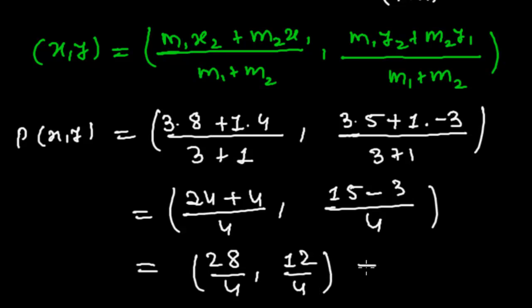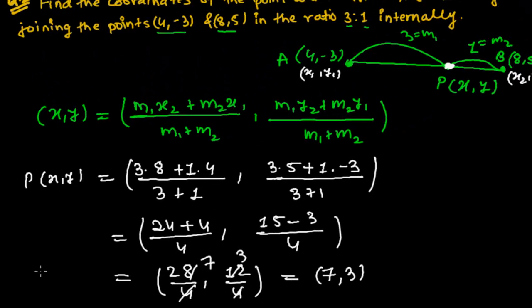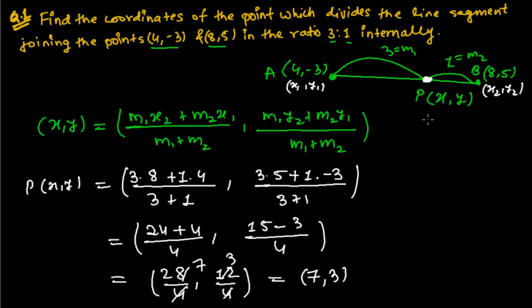So equals to 28÷4 is 7, and 12÷4 is 3. We got the value of P(x, y), that is (7, 3). This point exactly, (7, 3), divides this line AB.